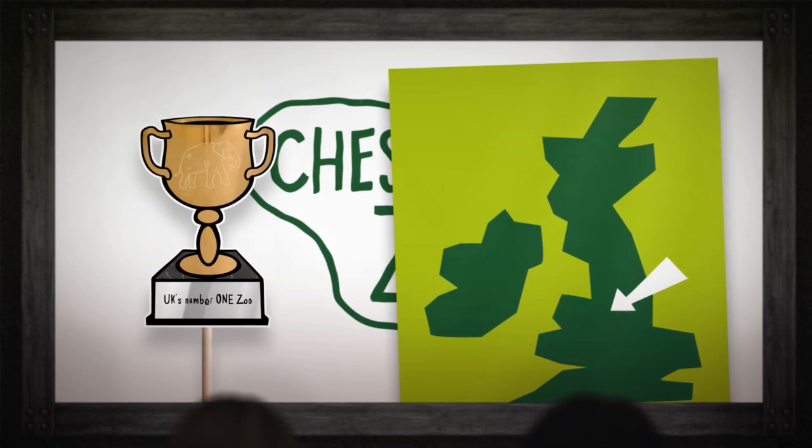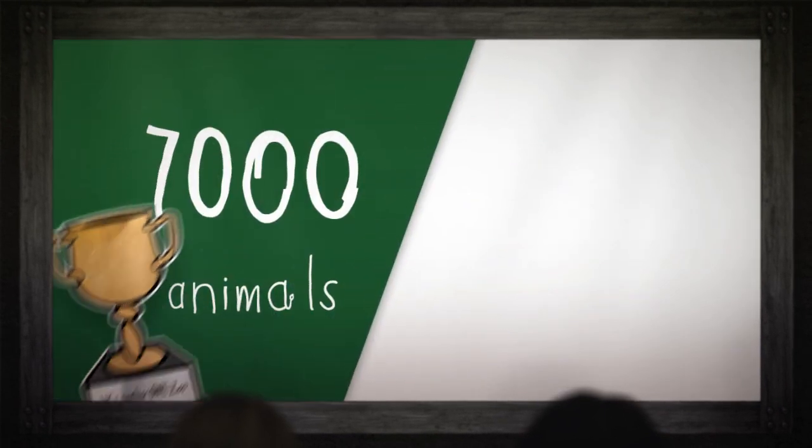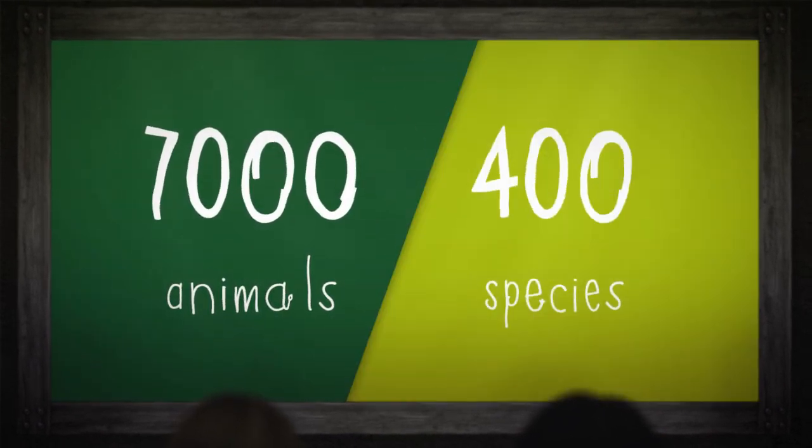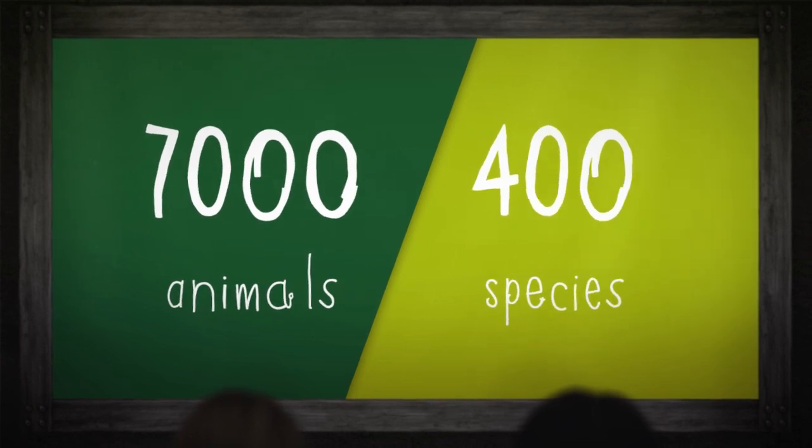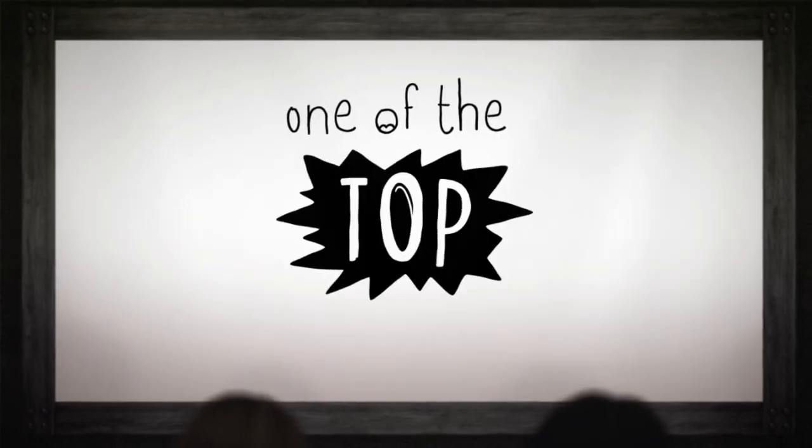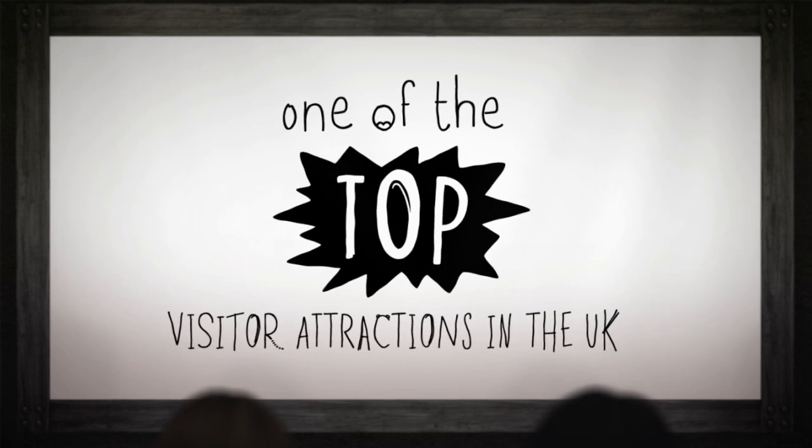Chester Zoo is the UK's number one zoo and with over 7,000 animals and 400 species to discover, it's no surprise we're one of the top visitor attractions in the UK.